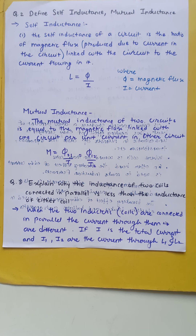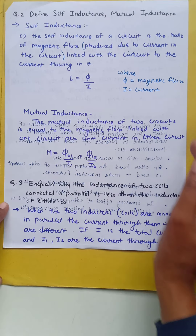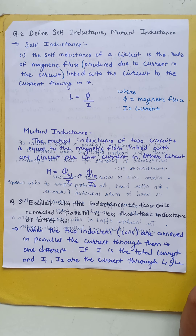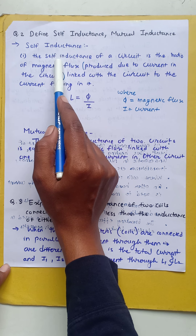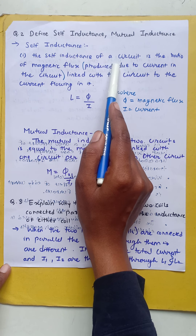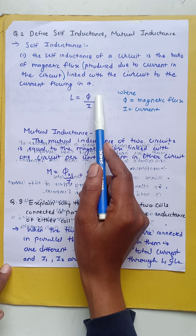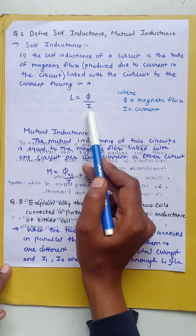Now we will move to our next question. The second question is: define self-inductance and mutual inductance. We will first try to define self-inductance. The self-inductance of a circuit is the ratio of magnetic flux produced due to current in the circuit linked with the circuit to the current flowing in it.